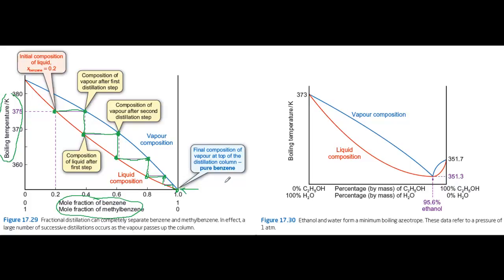Now not all liquid mixtures behave in this straightforward way, like benzene and methylbenzene. Some liquid mixtures, with a large positive or negative deviation from Raoult's law, form an azeotropic mixture with a constant boiling temperature. And this means the liquids cannot be completely separated by distillation.